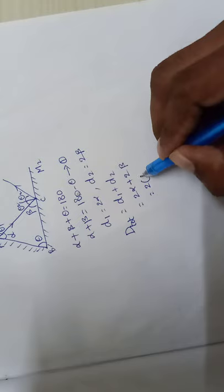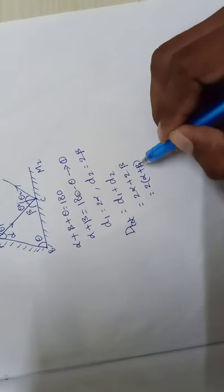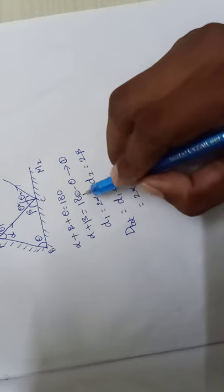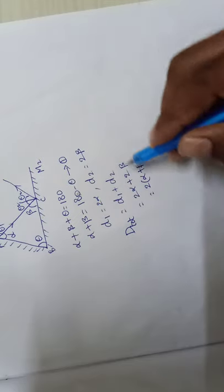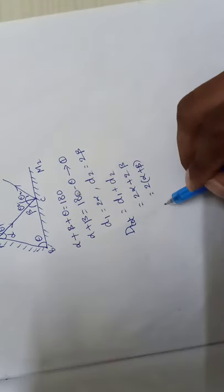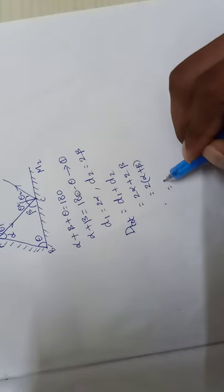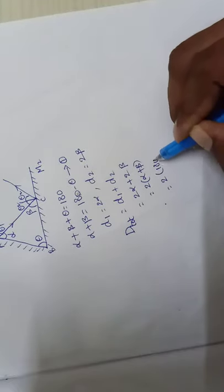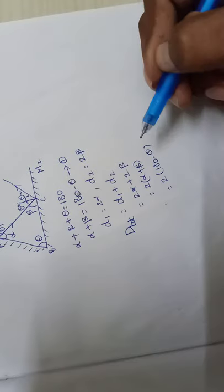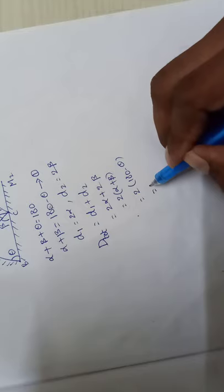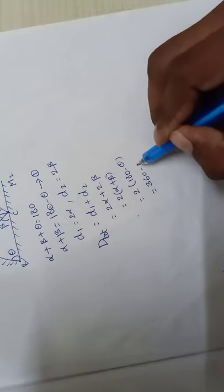From this first equation, alpha plus beta in the sense is 180 minus theta, so we can substitute that value into this. Then 2 into 180 minus theta, so then if you multiply, 360 minus 2 theta. This is total deviation.